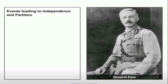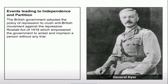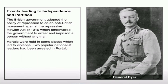Events Leading to the Independence and Partition: The British government adopted the policy of repression to crush the anti-British movement against the repressive Rowlatt Act of 1919, which empowered the government to arrest and imprison a person without any trial. Hartals were held in some places which led to violence. Two popular nationalist leaders had been arrested in Punjab.